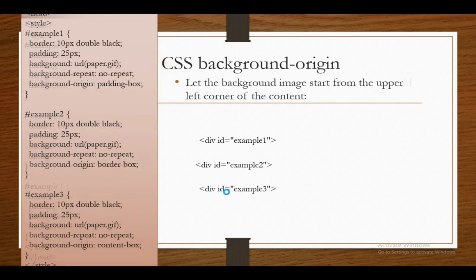Next we are going to see about background-origin. The background-origin property specifies the origin position — the background position area of the background image. Note that this property has no effect if background-attachment is set to fixed. Here is the example for background-origin — let's set the background image to start from the upper left corner of the content. The next value is padding-box.